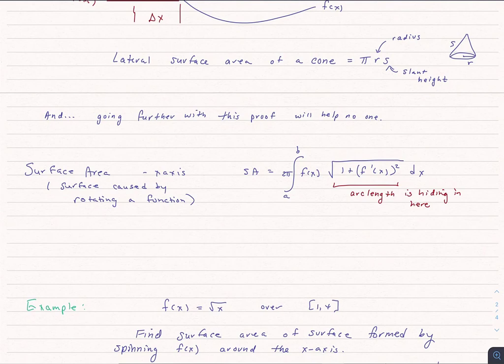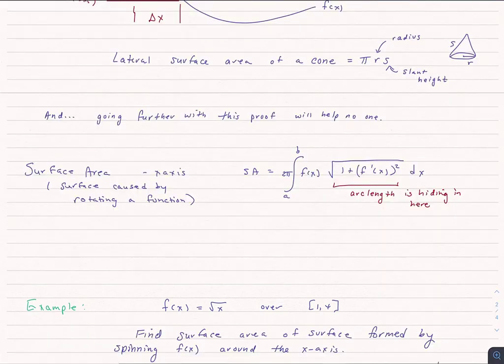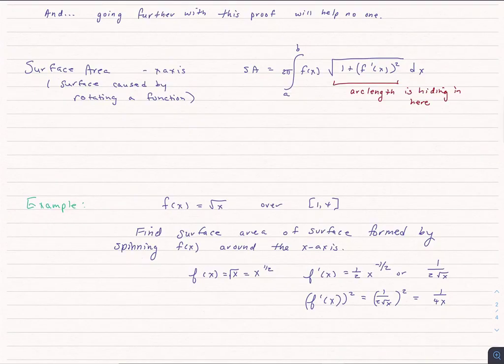So let's do a quick example. Let's let f of x be square root of x, and we're going to go from 1 to 4 in terms of x. And we want to find the surface area of the surface formed by spinning this function around the x-axis. This is really pretty straightforward.